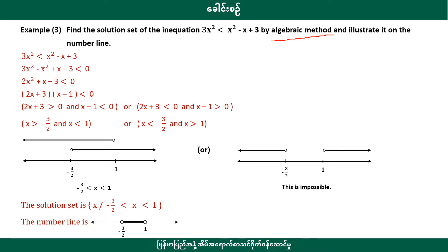We have 3x cubed, 2x. We will find the algebraic method, and then we have two expressions. Now I will see that is also one of the languages that is the add plus. Now if you are the add plus, then you can add more than one. I will notice 1 is greater than 3.